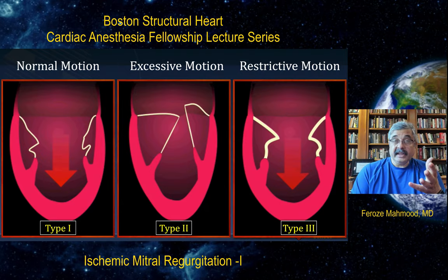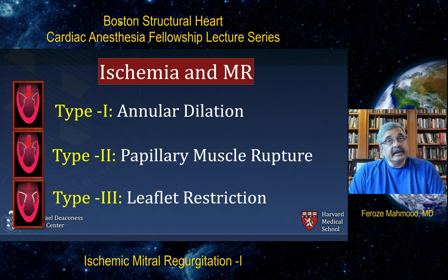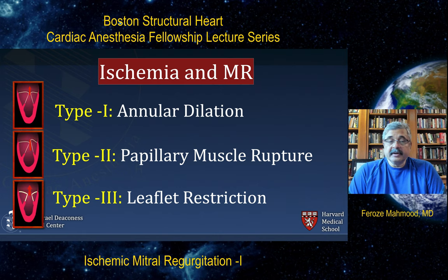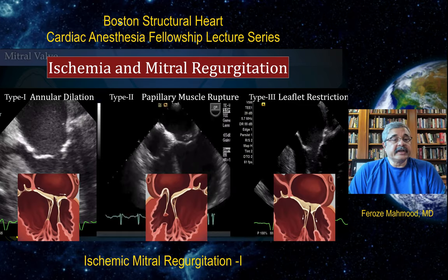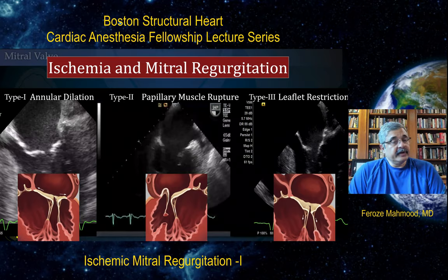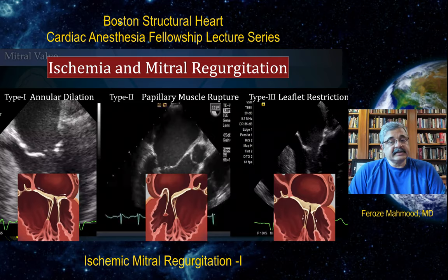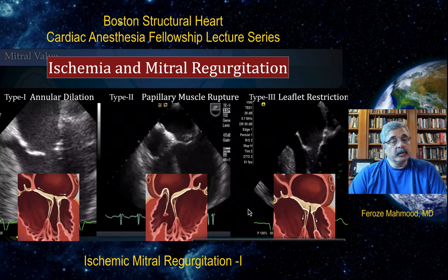Therefore, ischemia in these three examples can cause annular dilation leading to significant mitral regurgitation, Type 2 dysfunction because of papillary muscle rupture causing excessive motion, and lastly ischemic tethering of the leaflets leading to Type 3 or restricted mitral leaflet motion. So the pathophysiology of mitral regurgitation in ischemia is functional valve incompetence due to myocardial injury and adverse ventricular remodeling. The leaflets and chordae tendineae are innocent bystanders in this whole process.